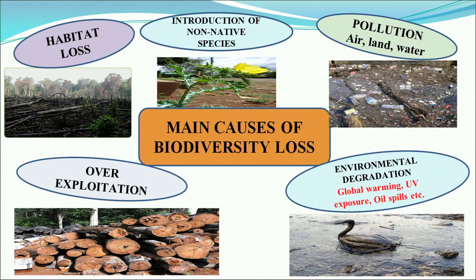Main causes of biodiversity loss: first is introduction of non-native species that do not belong to a particular area. Two outstanding examples are parthenium — the carrot grass — and water hyacinth, which were brought to our country as ornamental plants. The carrot grass came unintentionally along with some imported grains. Both have spread widely and are displacing our native species. Next is pollution — air, land, and water pollution all affect biodiversity. Then environmental degradation: global warming, UV radiation, and oil spills all negatively affect living species.